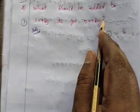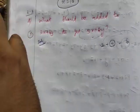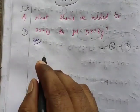So what should be added to 3x plus 6y to get the answer? We need to separate and find the solution.